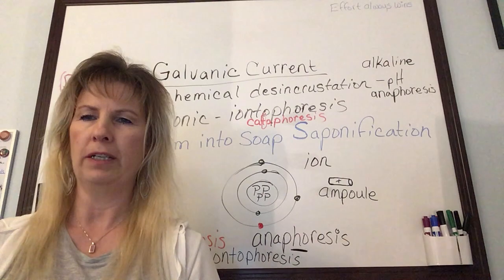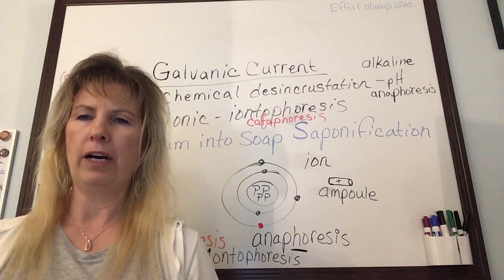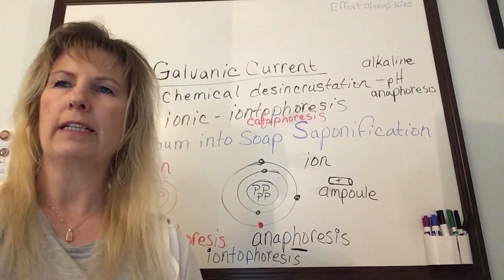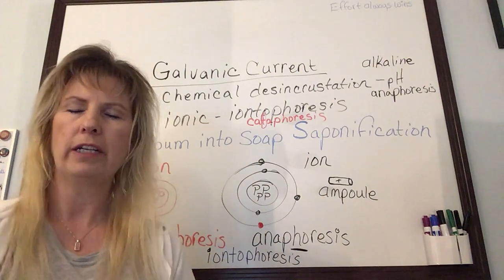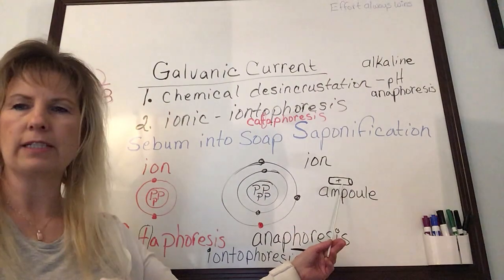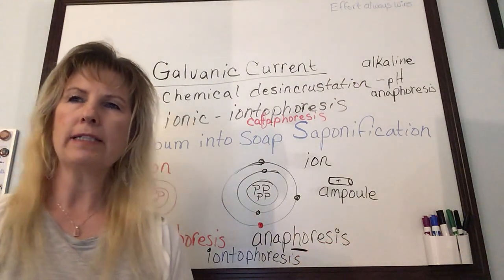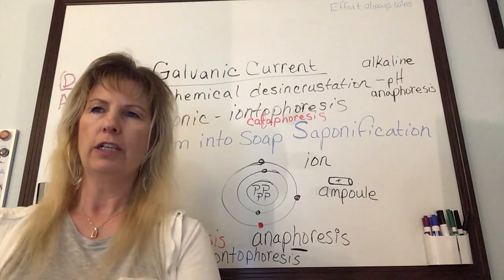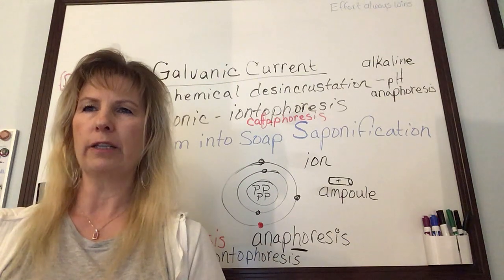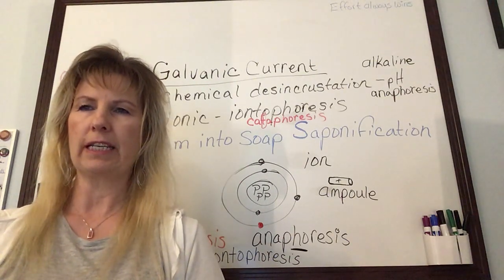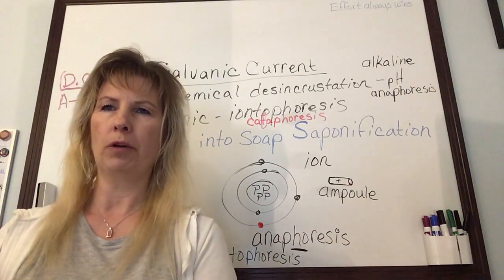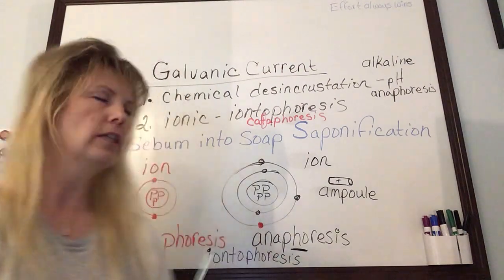Always advise your clients of the possibility of these sensations prior to starting treatment. Iontophoresis is the process of using electric current to introduce water-soluble solutions into the skin, such as from an ampoule. This process allows the esthetician to transfer or penetrate ions of an applied solution into deeper layers of the skin.